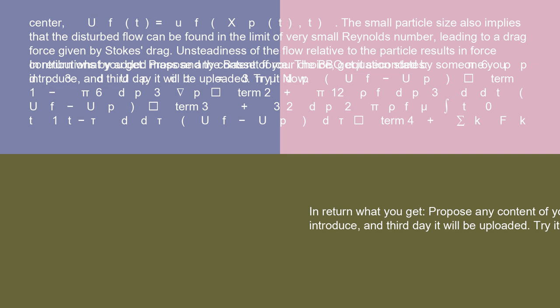Unsteadiness of the flow relative to the particle results in force contributions by added mass and the Bassett force. The BBO equation states: pi/6 rho_p dp^3 dup/dt equals 3 pi mu dp (uf - up) [Term 1] minus pi/6 dp^3 nabla p [Term 2] plus pi/12 rho_f dp^3 d/dt(uf - up) [Term 3] plus 3/2 dp^2 sqrt(pi rho_f mu) integral from 0 to t of 1/sqrt(t-tau) d/dtau(uf - up) dtau [Term 4] plus sigma_k fk [Term 5].